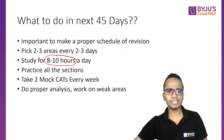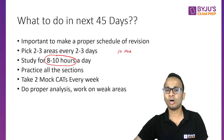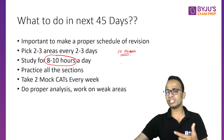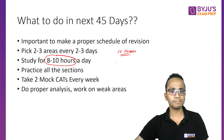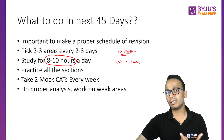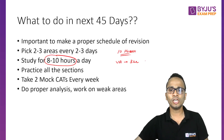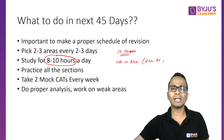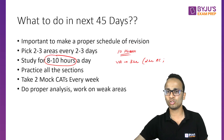If you decide to spend 10 hours daily on CAT studies, you can start with Verbal Ability and spend around three hours on it. Reading Comprehension is the backbone of the Verbal Ability section, so out of these three hours, spend two hours on RC passages and the remaining one hour on para jumbles, para completion, and so on.